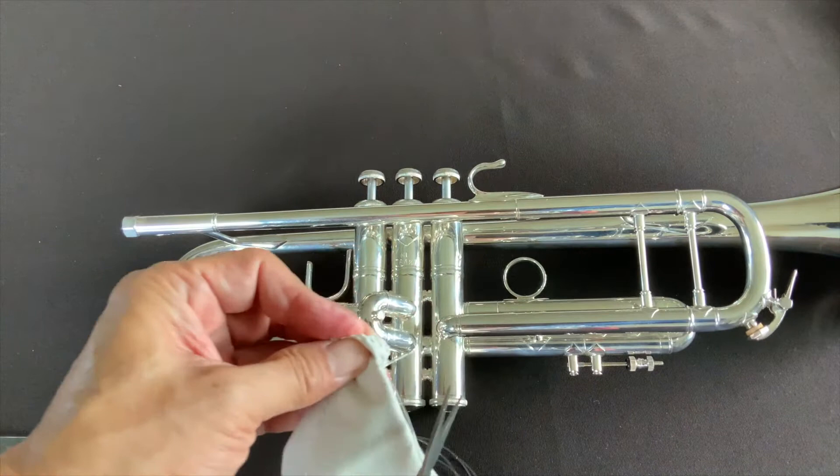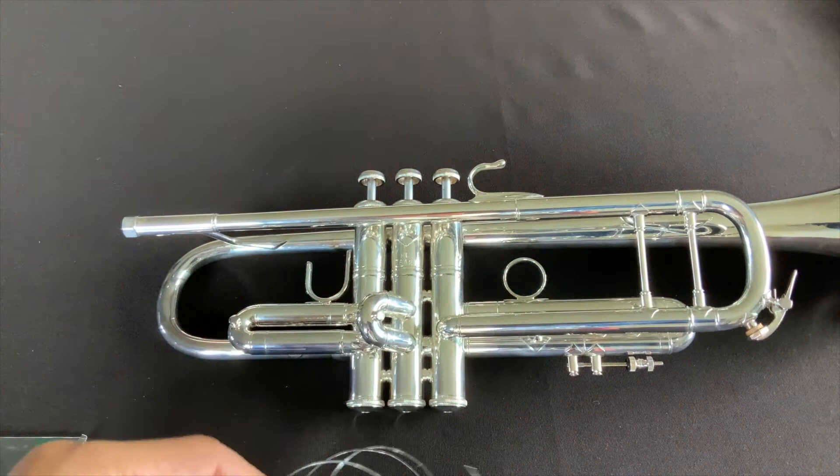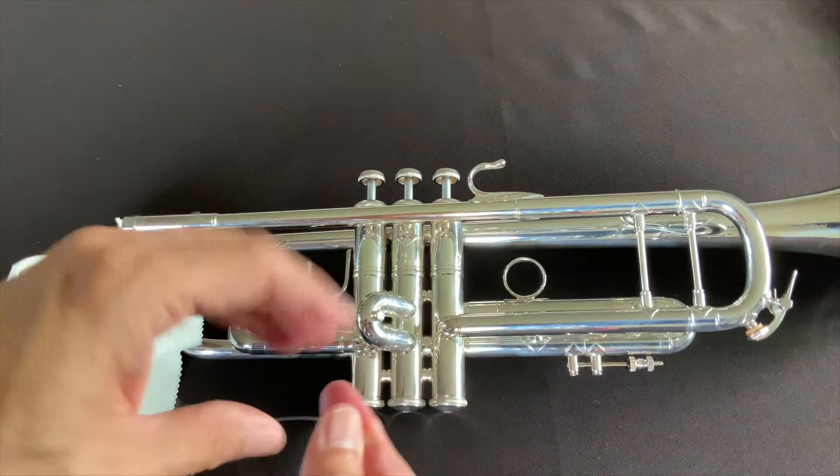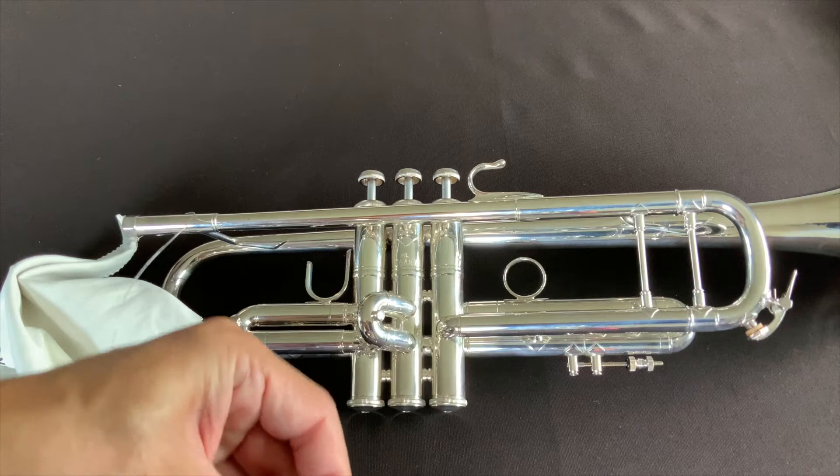I'll simply cut off this end here so that it doesn't scratch anything. Cut that off nice and close. Then I'll measure out roughly the length of my lead pipe. So this is the end, and roughly about here - I'll give myself a little bit of extra room, but I can just cut off this excess.